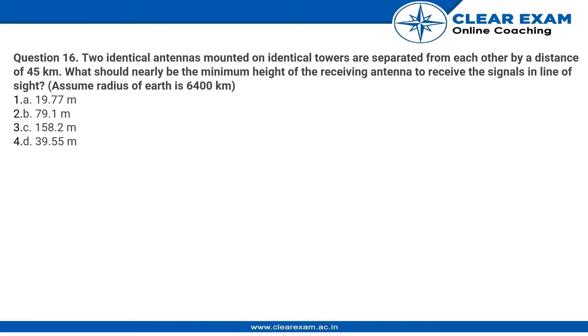So those two antennas can receive and transmit the signals in line of sight. We are told to assume the radius of the earth is 6400 kilometers.